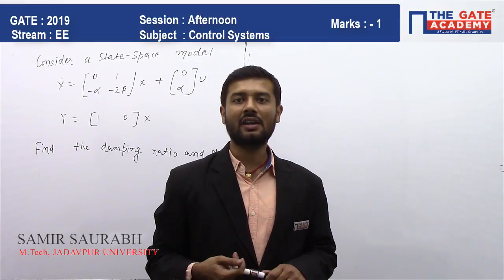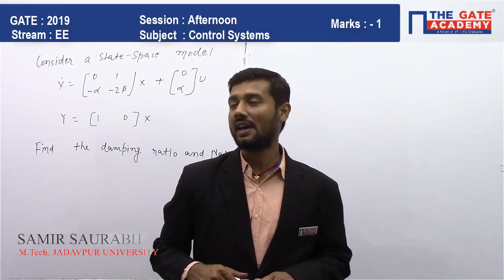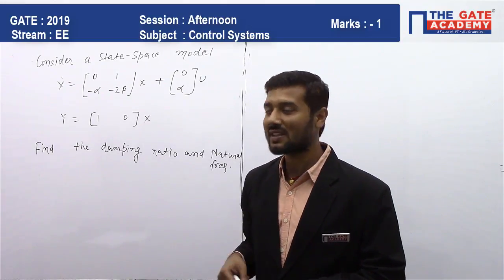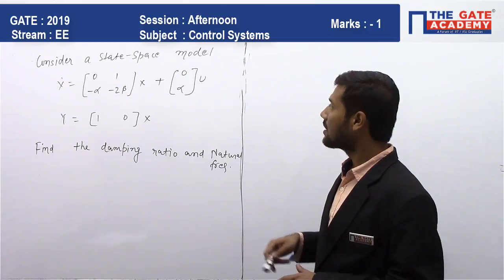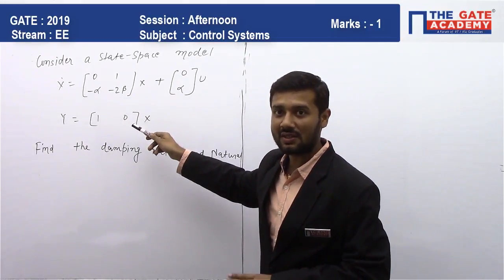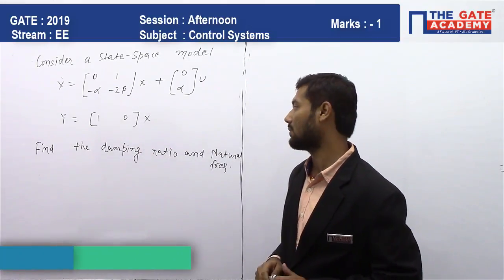Hello students, this is Samir and in this video we will be solving a question from control systems. This particular question is belonging to state space analysis. The question is: consider a state space model with state space representation given as A matrix, B matrix, and C matrix.